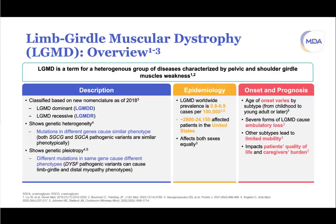Some forms of LGMD can be quite severe and result in loss of ambulation, while other forms allow patients to walk well into late adulthood. Certain subtypes create considerable limitations in mobility with significant impacts on quality of life and caregiver burden.